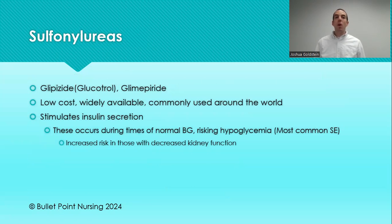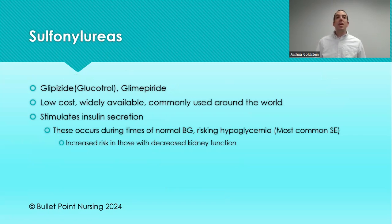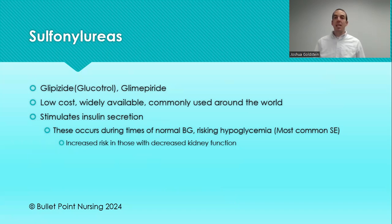Next, we have the sulfonylureas. In the United States, this is pretty far down the list — used when a patient can't tolerate metformin, isn't at goal, and is unable to get a GLP-1 agonist or SGLT2 inhibitor. However, sulfonylureas are widely used as first-line agents in many countries worldwide because they are extremely cheap. They work by stimulating insulin secretion — increasing the insulin level so more sugar can enter cells, as long as the cells aren't too resistant.